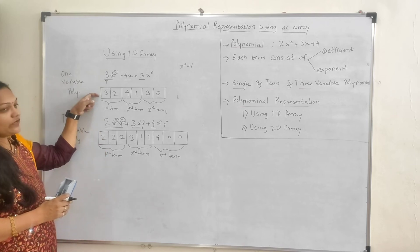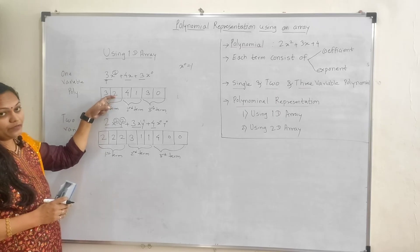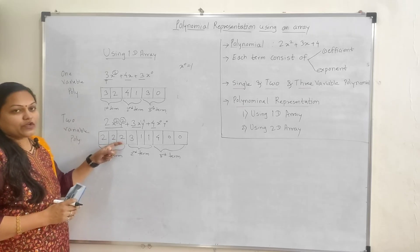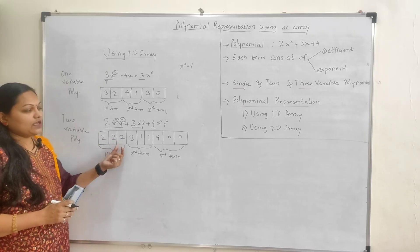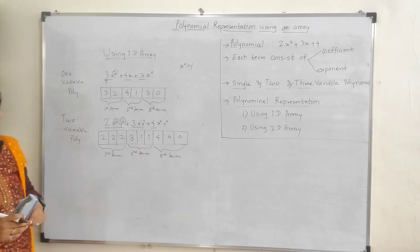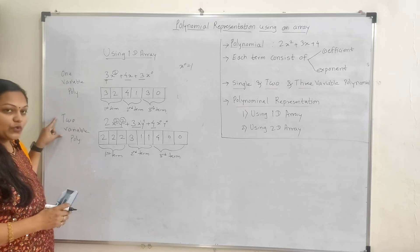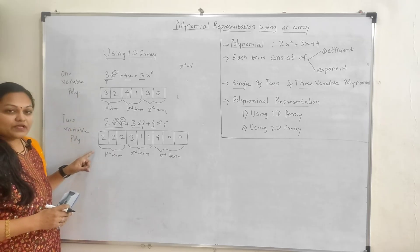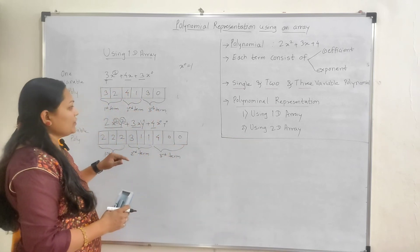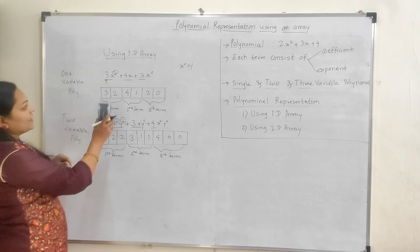So in a one variable polynomial, what we need to consider is: coefficient and exponent of the variable. In a two variable polynomial: coefficient, exponent of first variable, and exponent of second variable — this we need to store for each element. In this way we can store one variable and two variable polynomial using a one-dimensional array. Now, if there is a two-dimensional array, how we can store one variable and two variable polynomial — that we will see.